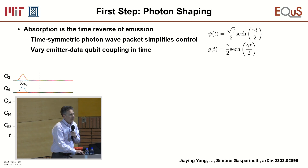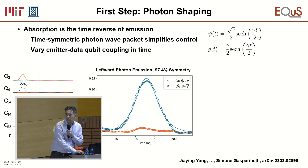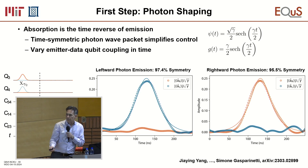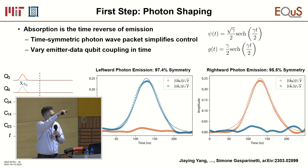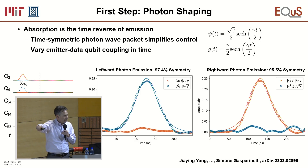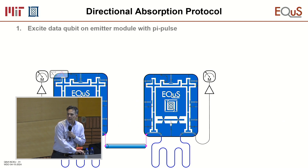The first step is to shape the photon, because emission and absorption can be time-reversals of each other if the process is time-symmetric. We achieve a high degree of symmetry. The way we shape the photon is by shuttling it from where we created the entanglement to where it's emitted — the rate at which we move that entangled state down allows us to shape how the photon comes out.